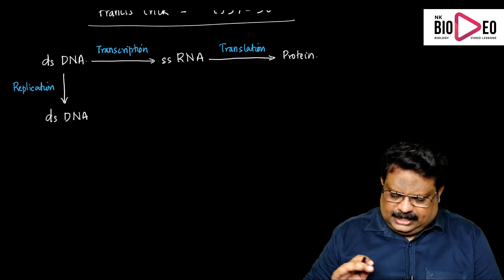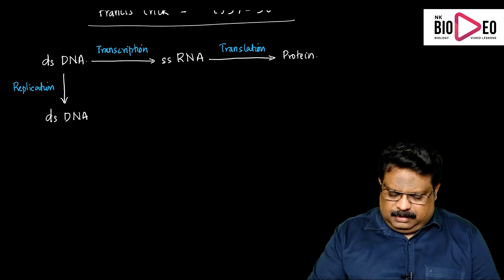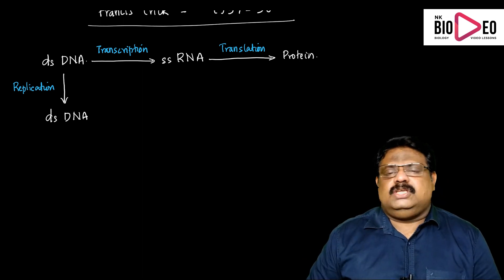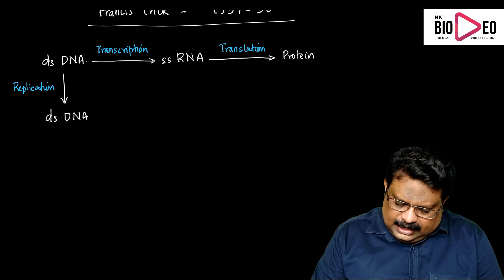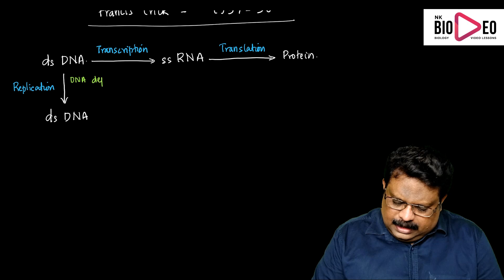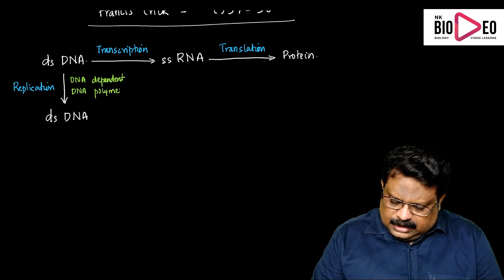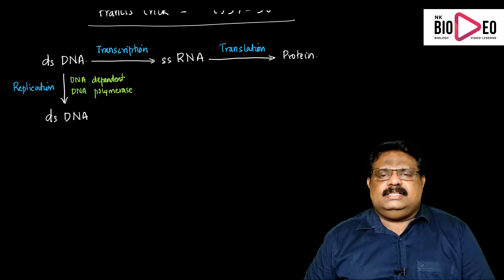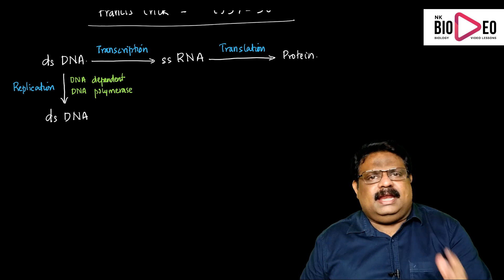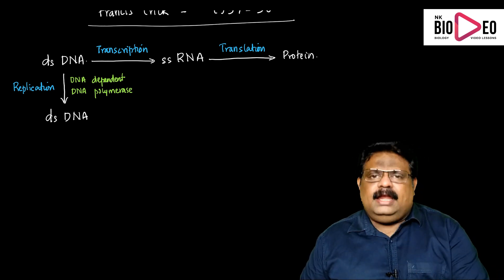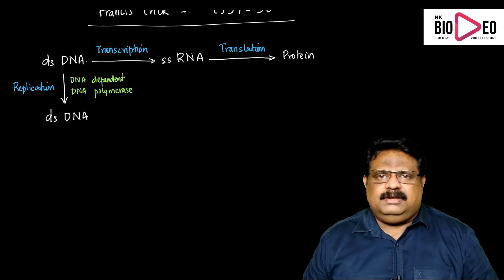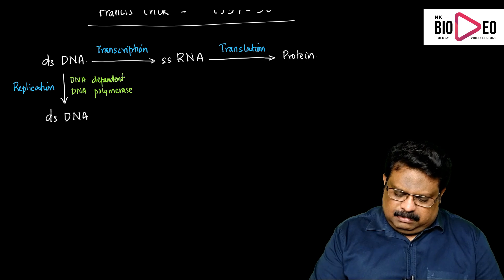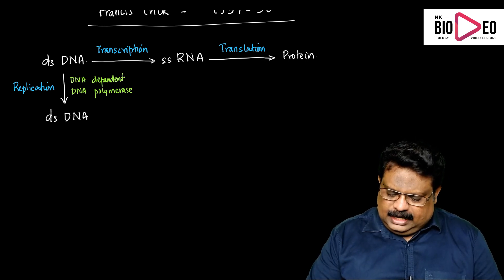In the case of replication, one DNA produces its copy. Many enzymes are involved, but the most important enzyme needed for the process is called DNA-dependent DNA polymerase. This enzyme works on the basis of another DNA — the mother DNA. So replication is the transfer of information from mother DNA to daughter DNA using DNA-dependent DNA polymerase.